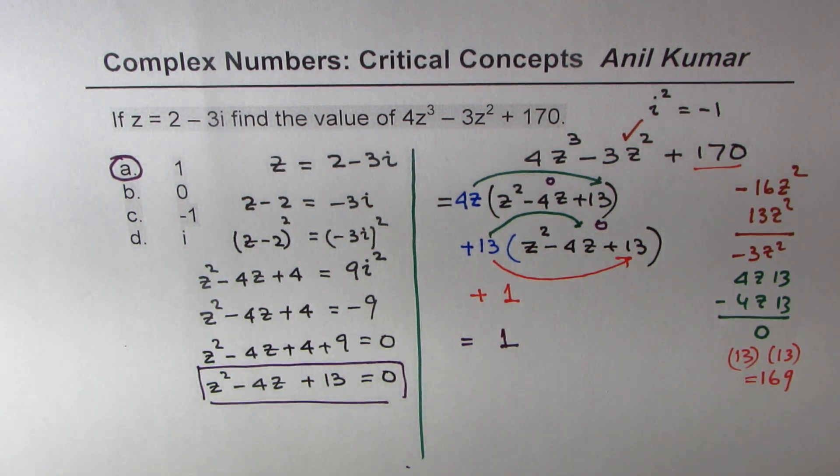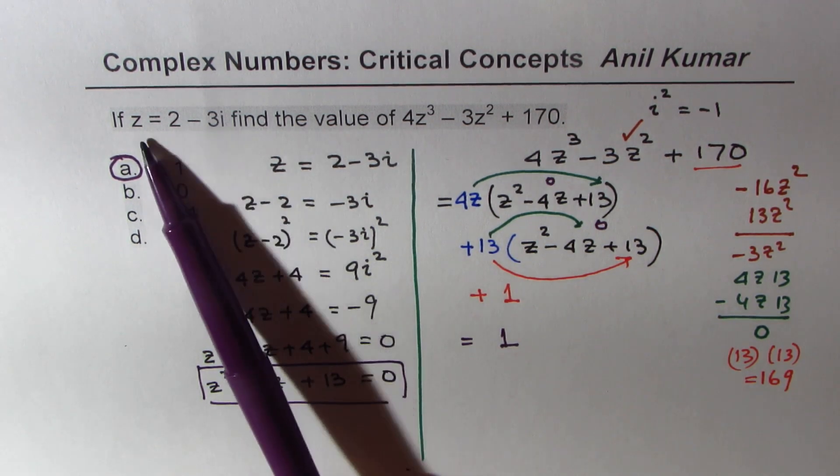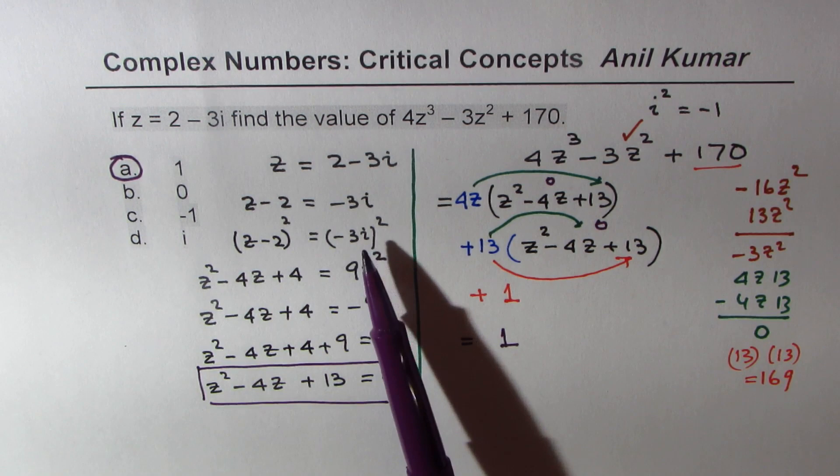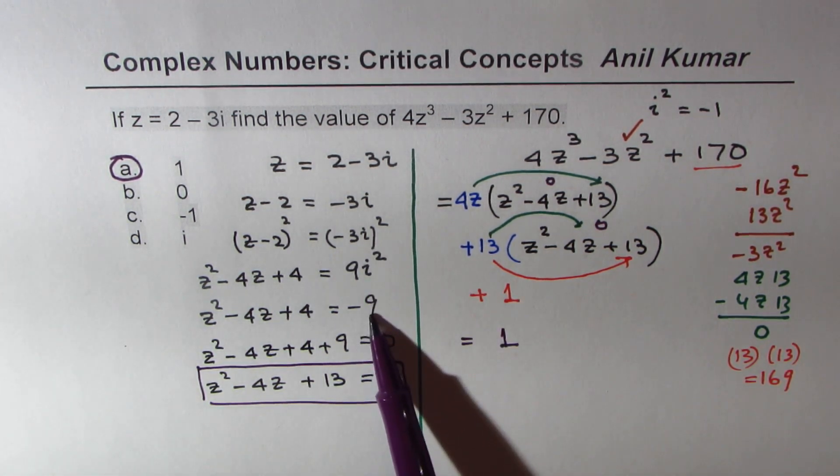Perfect. So let's repeat the steps: whenever you are given a complex number, bring the real numbers together, square, get rid of that complex value i², which is negative 1.